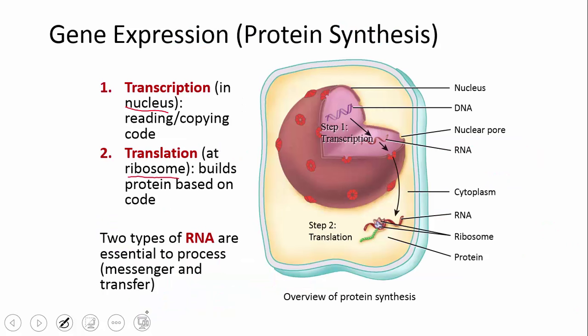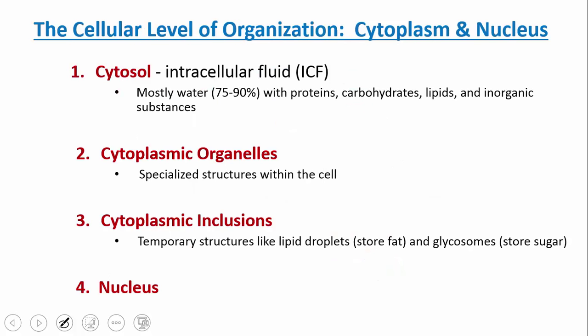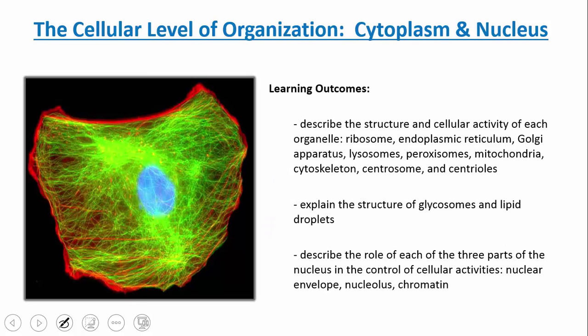This shows the same central dogma but gives you spatial recognition of where these processes take place. Transcription is happening in the nucleus; translation is happening in the cytoplasm. So the four things we talked about today were: cytosol, cytoplasmic organelles, cytoplasmic inclusions, and the nucleus. Make sure you understand the learning objectives before you proceed to the next lecture. If you can't execute those, please watch the lecture again or seek assistance.